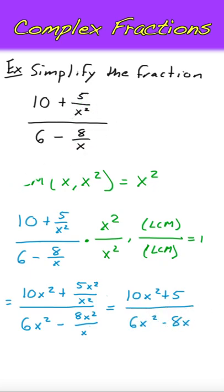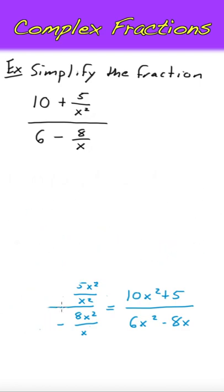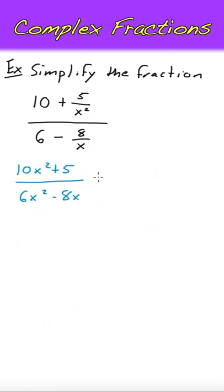Now, we should factor the numerator and denominator in case the fraction can be reduced. The top terms share a common factor of 5, factoring to 5 times 2x squared plus 1. The bottom terms share a common factor of 2x, factoring to 2x times 3x minus 4.